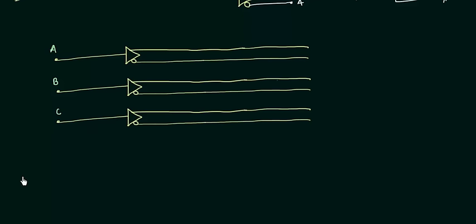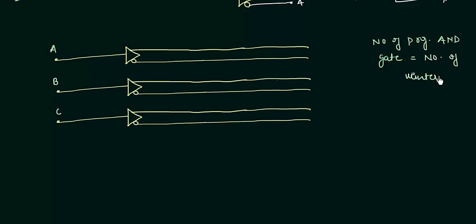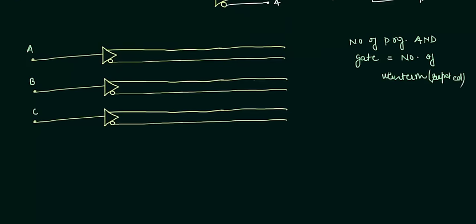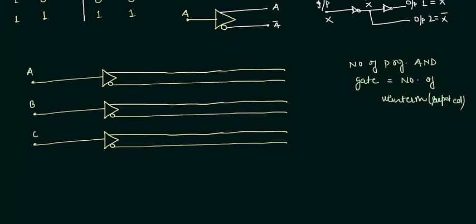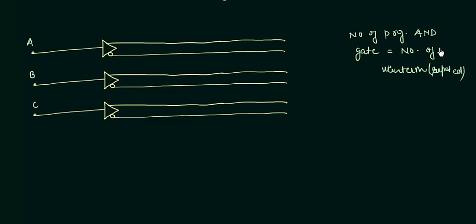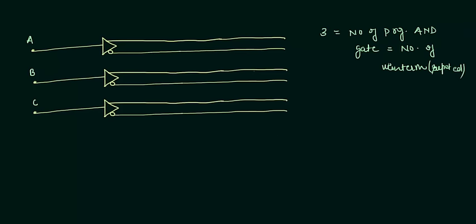Now let's move to step 4, which is to find out the number of programmable AND gates. The number of programmable AND gates equals the number of distinct min terms — and remember, repeated min terms are not counted twice. Here you can see there are 4 min terms but AC is repeated twice, so we take AB̄, AC, and BC — 3 unique min terms. Therefore the number of programmable AND gates is also 3.